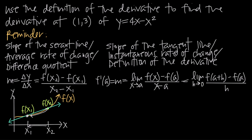The definition of the derivative is what we get when we reduce this distance between the two points to zero and create a tangent line — a line that only intersects the curve at a single point instead of two. We can also call it the slope of the tangent line, the instantaneous rate of change, or how fast the function is changing exactly at that instant at x sub 1.